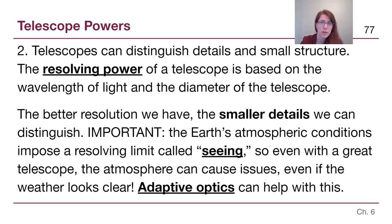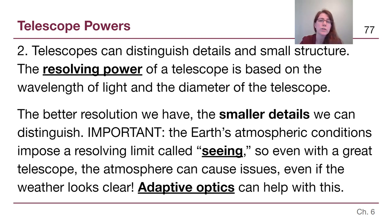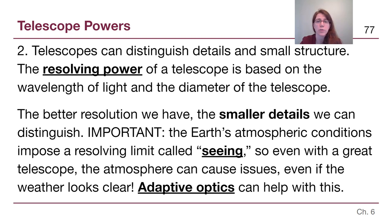The second power that a telescope has is to distinguish small details and structure that our eyes wouldn't be able to pick up. This is considered resolving power, and it is based on the wavelength of light being used and the diameter of the telescope. In digital terms, a low-resolution image has big pixels with few small details, while a high-resolution image has really small pixels and fine detail.